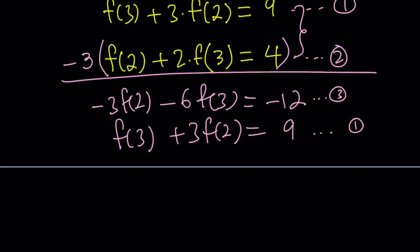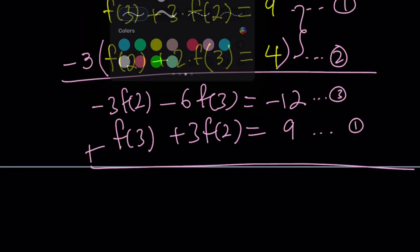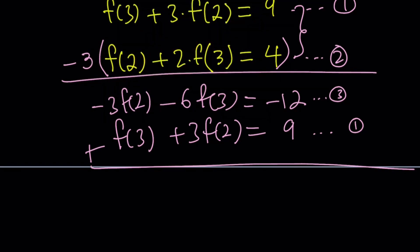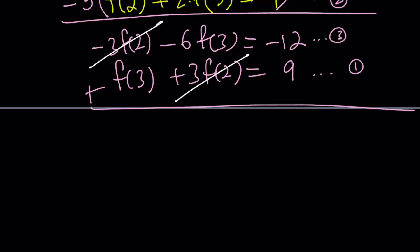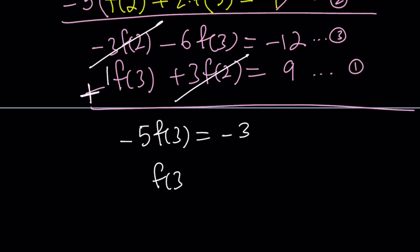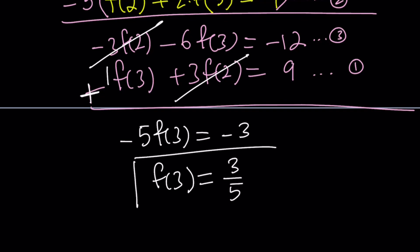Now I'm working with equations 1 and 3. Adding these equations, the 3 f of 2 and negative 3 f of 2 cancel out — that is elimination. 1 f of 3 minus 6 f of 3 becomes negative 5 f of 3, equals negative 12 plus 9 which is negative 3. Dividing both sides by negative 5, you get f of 3 equals 3 over 5. And that is the answer.